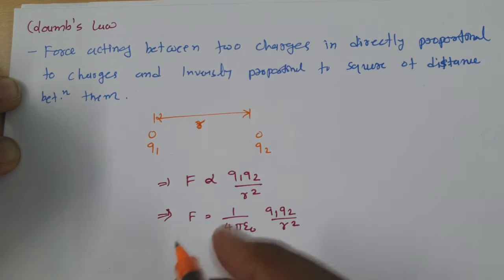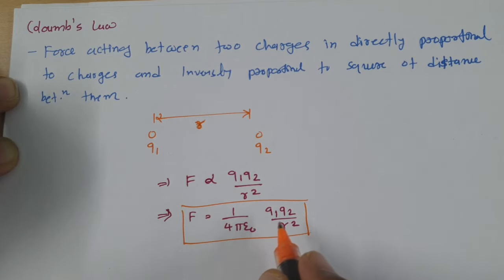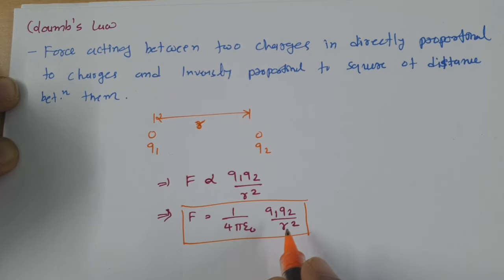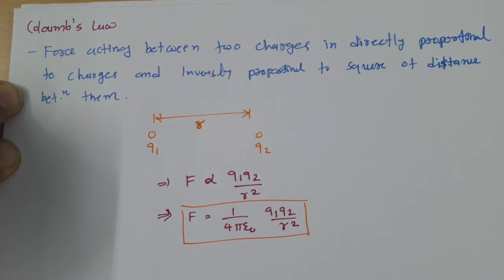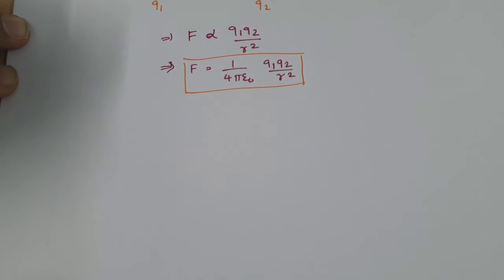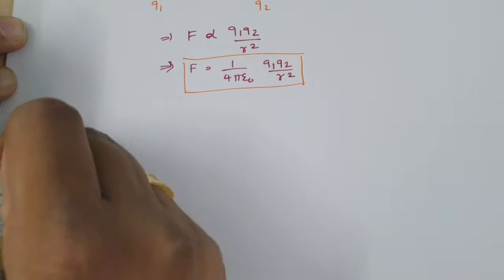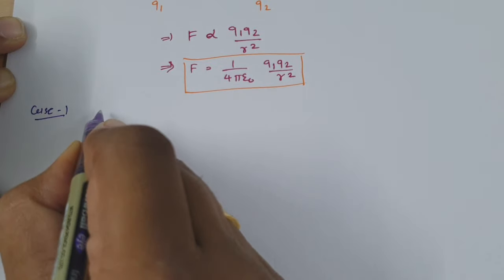So this is Coulomb's law — the force acting between two charge particles is directly proportional to those two charges and inversely proportional to the square of distance between them. Now I will explain two cases: what will happen if the polarity of two charges is the same, and what will happen if the polarity of the two charges is opposite. In case number one, I will consider both charges having the same polarity.